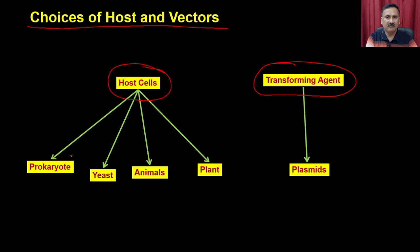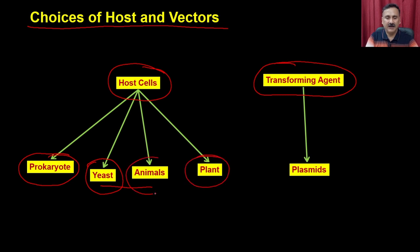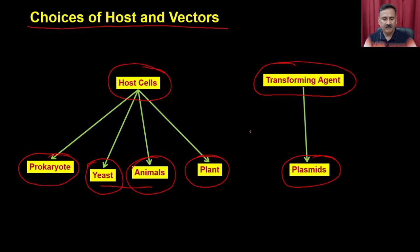As far as the host cell is concerned, you have multiple choices. You can use the prokaryotic system — either E. coli or other bacterial cells. You can use the eukaryotic system such as yeast, animals, and plants. As far as the transforming agent is concerned, you can use different types of plasmids — mammalian vectors, yeast vectors, and so on. We are going to discuss the prokaryotic expression system, the yeast expression system, and then the animal expression system.